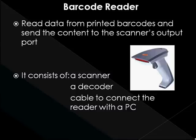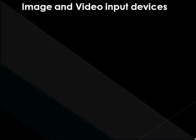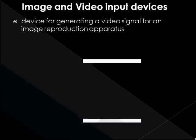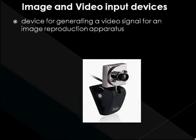Image and video input devices are devices for generating a video signal for an image reproduction apparatus. A digital camera records and stores photographic images in digital form, that can be fed to a computer for viewing and printing.